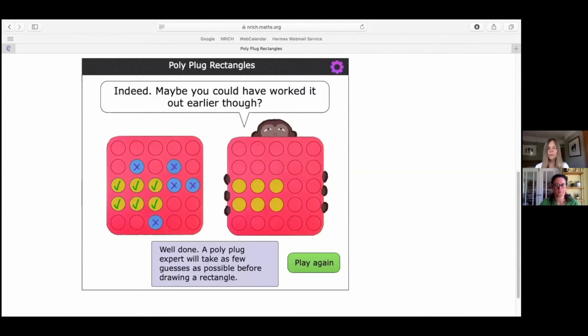Oh, but look, Fran, monkey's asking us a question. Maybe you could have worked it out earlier, though. Oh, that's interesting. Well, I tell you what. Why don't we have another go, Fran, and see whether we could do as monkey suggests, and think a bit more carefully about how soon we could work out where the rectangle is. Okay. All right. Let's click play again, then.